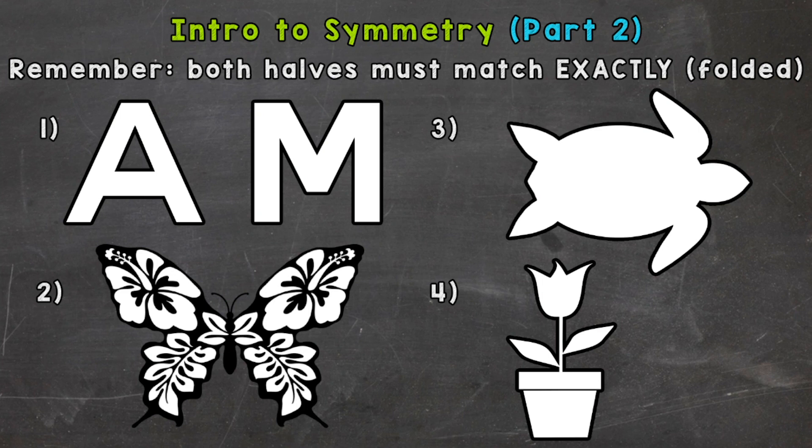Now remember, when we're finding lines of symmetry, both halves must match exactly for something to be symmetrical. Not close, not kind of, but perfectly or exactly matched.